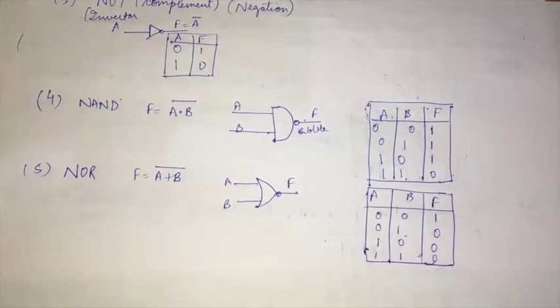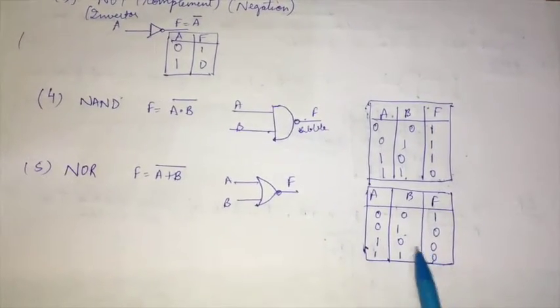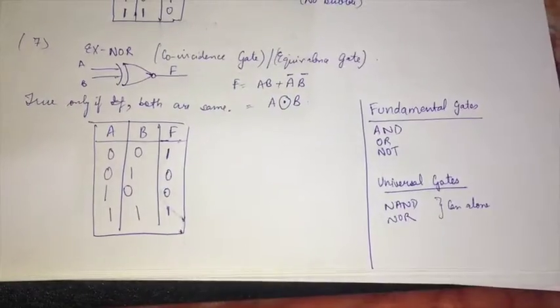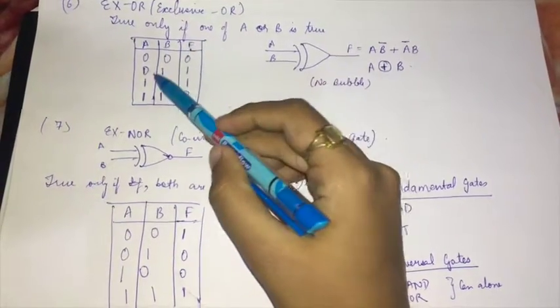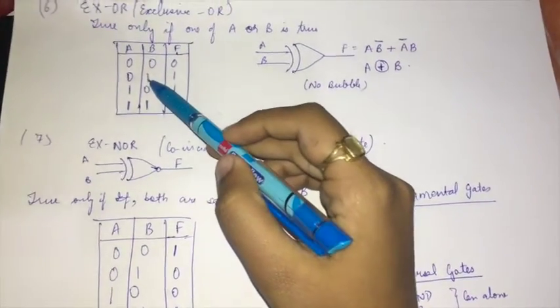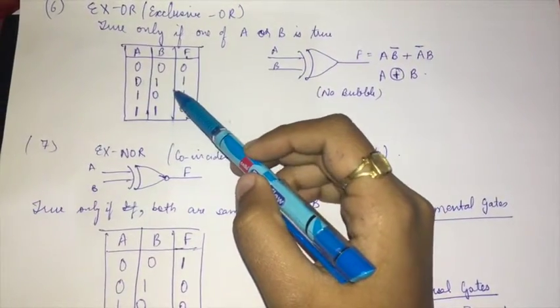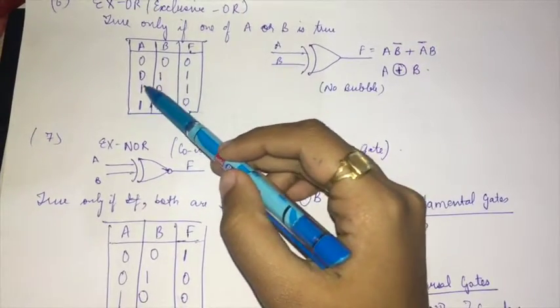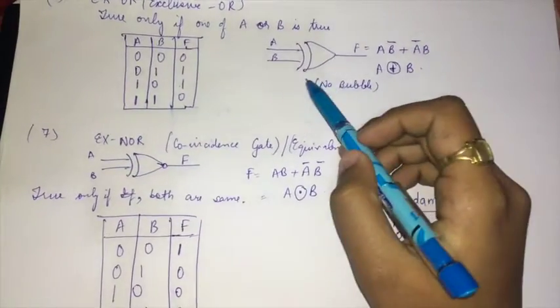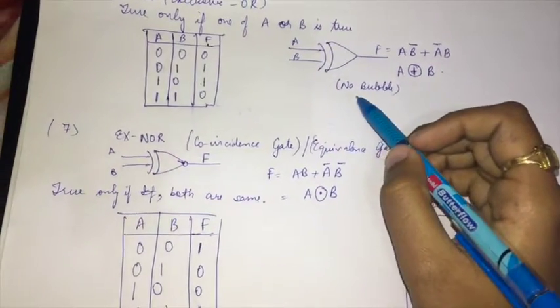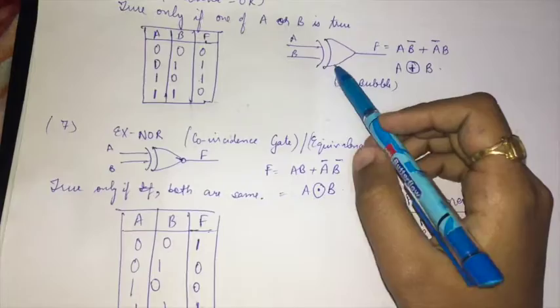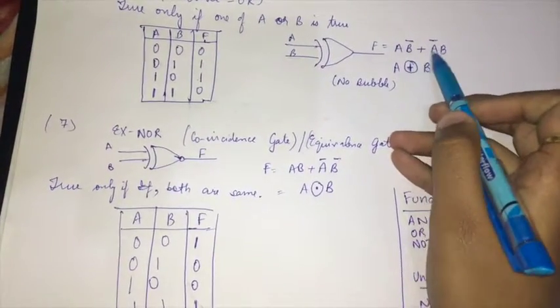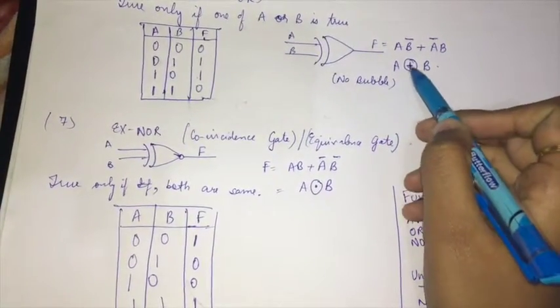Next is the XOR gate, or exclusive OR. If and only if one of A or B is true, then the XOR gate is true; otherwise it is false. This is the symbol for XOR gate—no bubble because this is not a complement of anything. The expression is AB̄ + ĀB, which is written as A ⊕ B.